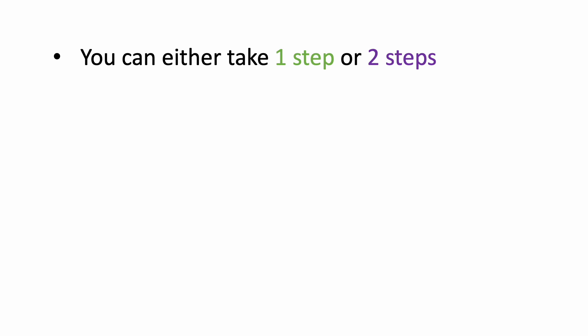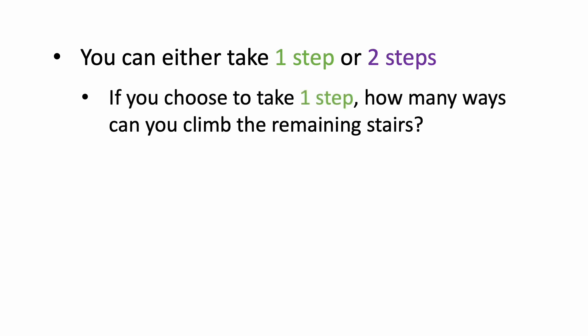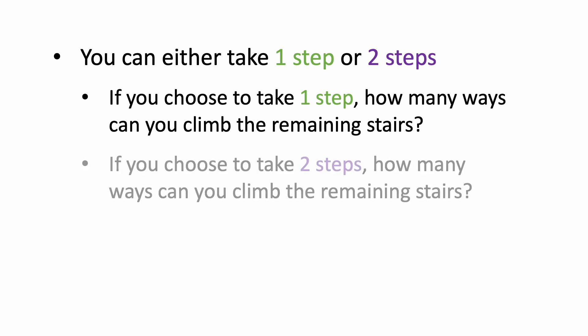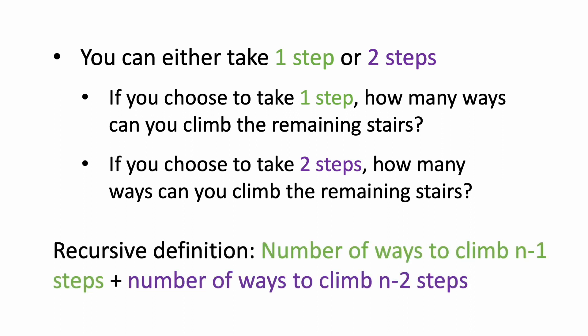Let's say you choose to take one step. After you take that step, the next question would be: how many ways can you climb the remaining stairs? Your other option is to take two steps, and similarly, after you take those two steps, how many ways can you climb the remaining stairs? So we can now write the recursive definition: the total number of ways to climb n stairs is the number of ways you can climb n minus one stairs, plus the number of ways you can climb n minus two stairs.